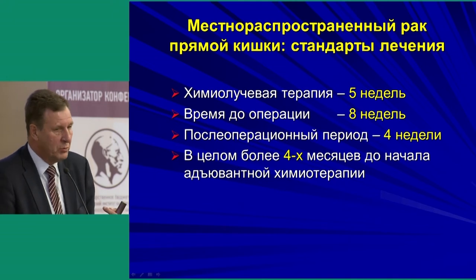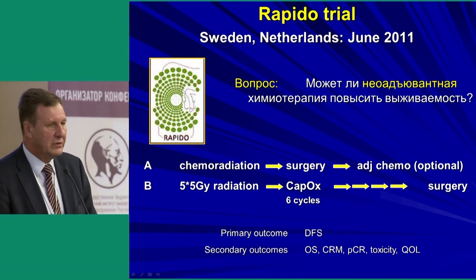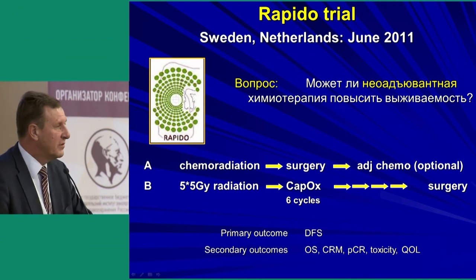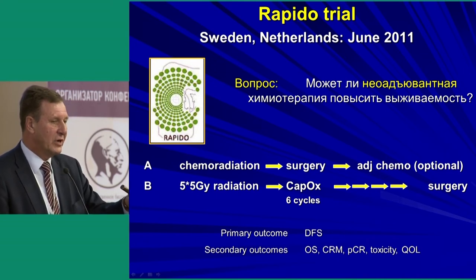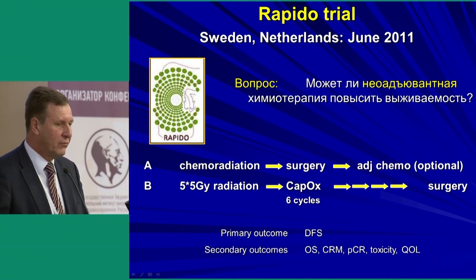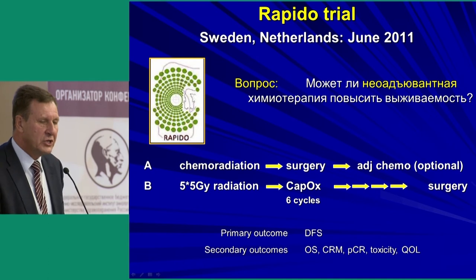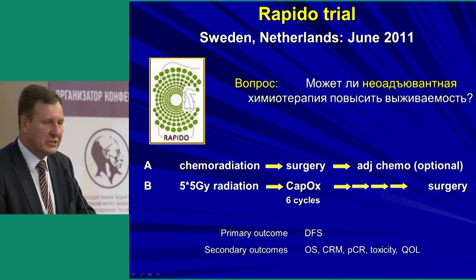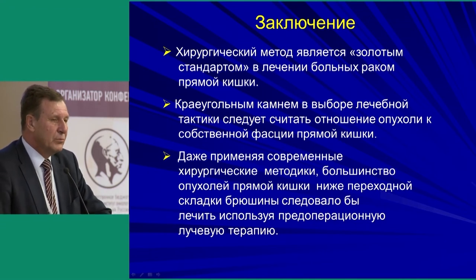Because we cannot administer adjuvant chemotherapy early, its results are unsatisfactory. This is studied in Europe in the RAPIDO trial. The main question is whether adjuvant chemotherapy improves survival. One arm uses classical long-course chemo-radiation plus surgery plus adjuvant chemotherapy; the second arm uses concentrated chemo-radiation 5×5 Gy, then an 8-week interval during which 6 cycles of chemotherapy are provided, followed by surgery. The primary outcomes are disease-free survival and cancer-specific survival, with complete pathological response as an important secondary outcome.